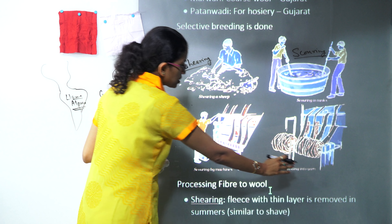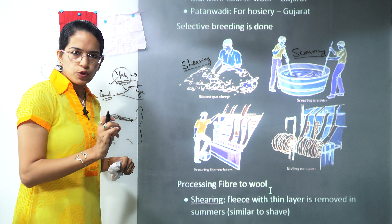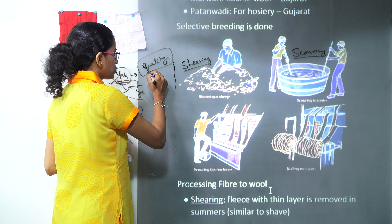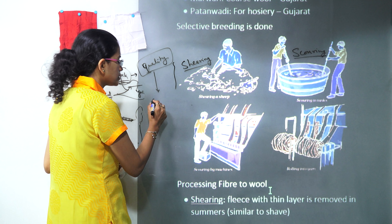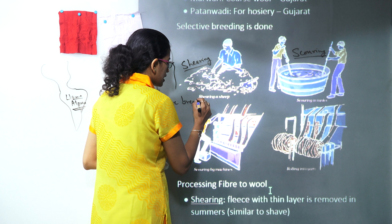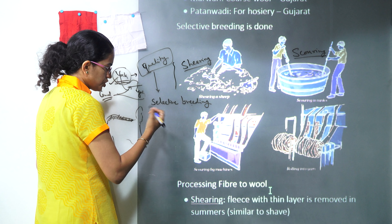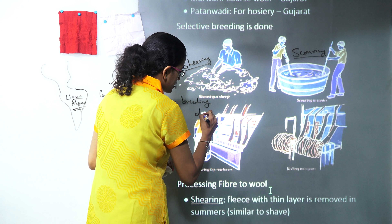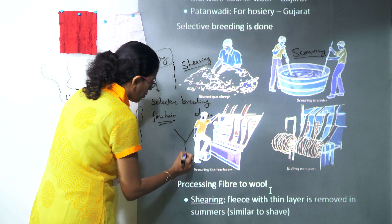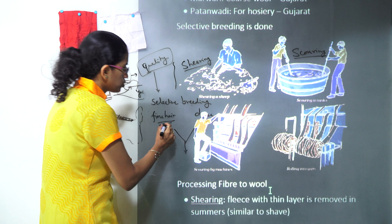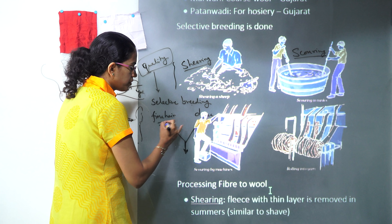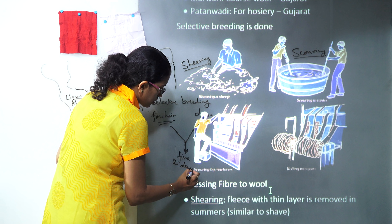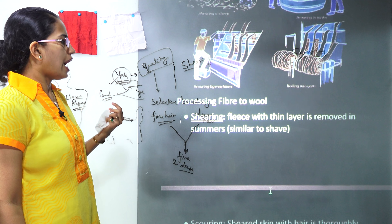Our ultimate objective is to obtain wool, but the quality of the wool is very important. This quality can be enhanced by a process known as selective breeding. Under selective breeding, if you have one breed with very fine hair and another with very dense hair, you cross them to form an animal which has both fine and dense hair — so the quality is fine but quantity is higher.